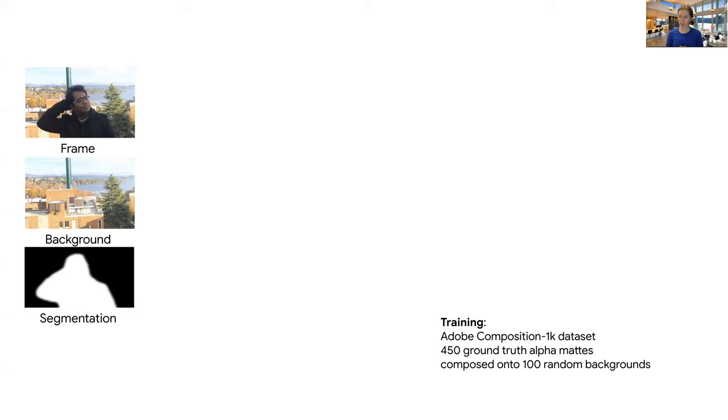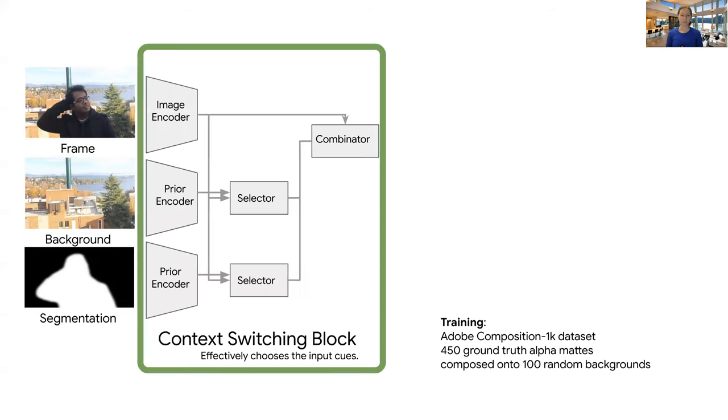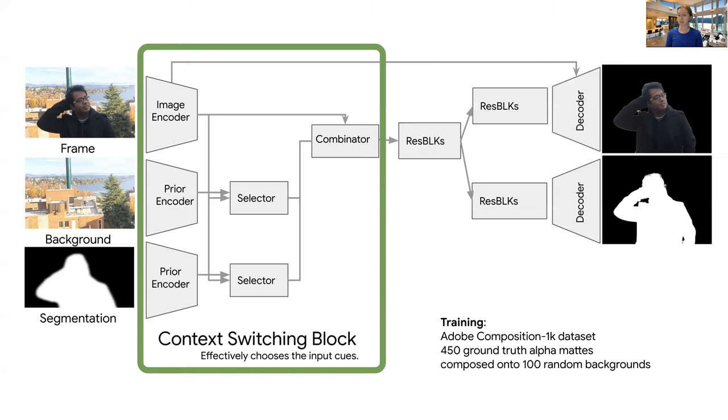So we created this dataset and now we actually have the ground truth alpha mat and we have an image so we can run pairwise supervised learning that will allow us to estimate the new foreground and alpha mat. So how do we do that? Given the frame, a background and a segmentation. So this is a rough segmentation of the human. We build a context switching block, which is doing the following thing. It takes the frame encodes it. It takes a background encodes it. It takes a segmentation encodes it. Background and segmentation are used as prior. Then there is two selector blocks and the combinator block that combines everything together. And the idea is to effectively choose the input cues, which cues to use and which cues are not as important.